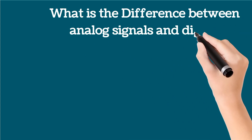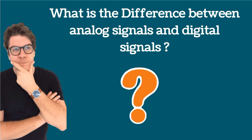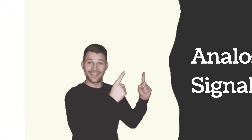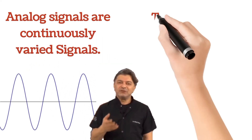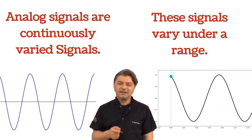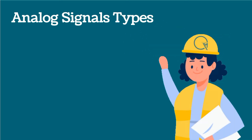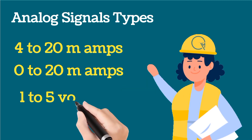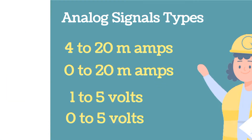Now we will see the difference between analog signals and digital signals — this question is also important for interviews. Analog signals are continuously varying signals and vary under a range. The analog signal types are 4–20 mA, 0–20 mA, 1–5 V, and 0–5 V. All these signals vary under a range, so they are analog signals.